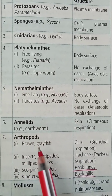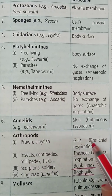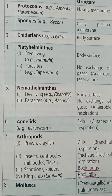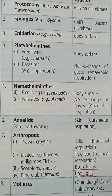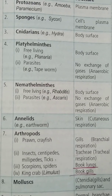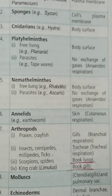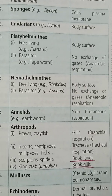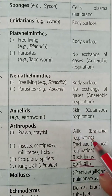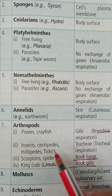Next is Arthropods. First, Prawn and Crayfish — the respiratory structure is the gills, that is branchial respiration. Branchial respiration is the exchange of gases taking place by the help of gills. It is found in most crustaceans, Mollusca, some insect larvae, some fishes, and some amphibians. It occurs only in water.